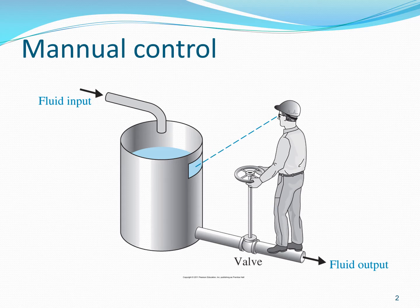We have two types of control: manual control and automatic control. The figure on this slide shows a manual control, where a person is controlling the level of liquid in a cylindrical tank. There is an inflow of fluid into the tank and the person manually changes the position of the valve to control fluid flowing out of the cylinder. This type of control is called a manual control.